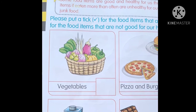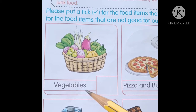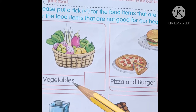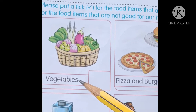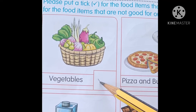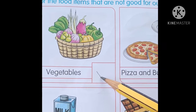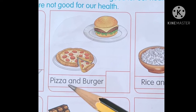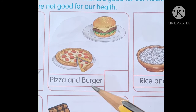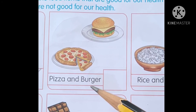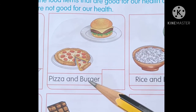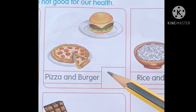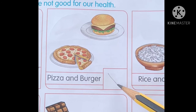Students, look here — vegetables, yane sabji. Yeh hamare swastha ke liye good hai, yes. Isliye is box mein aapko tick karna hai. Students, yahan dekho — pizza and burger. Yeh hamare swastha ke liye good hai? Healthy hai? No. Isliye is box mein aapko cross karna hai.